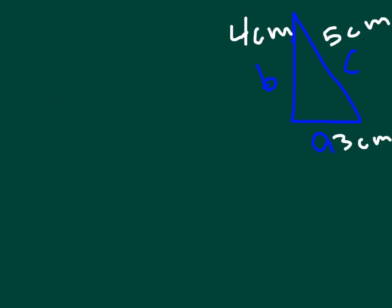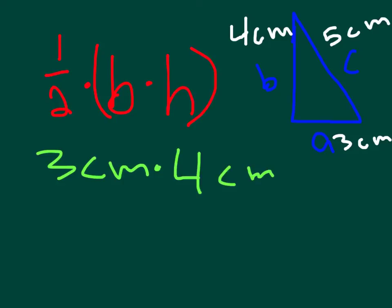Now the formula for the area of a triangle is one half times the base times the height and we're going to do that first. So the base of this triangle is 3 centimeters multiplied by the height which is 4 centimeters and that equals 12 centimeters.